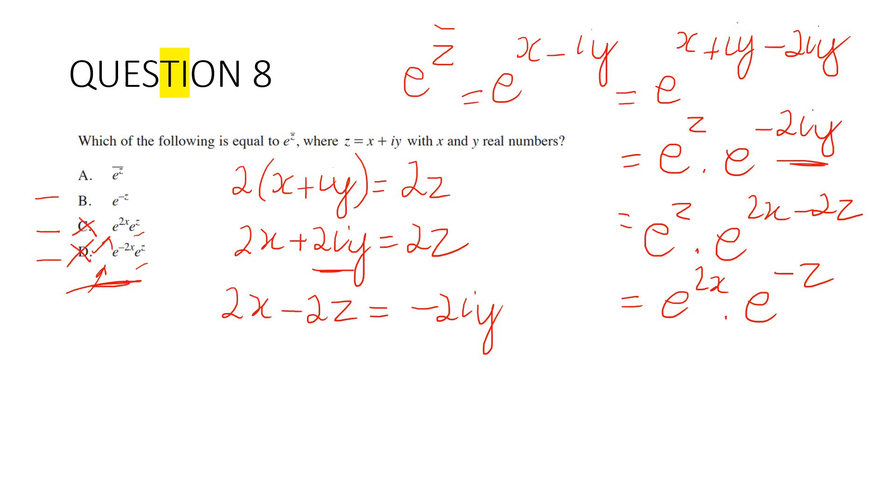Now with B, we can eliminate that because that's never going to be right. That would be e to the (x minus x minus iy), and that's never going to equal e to the (x minus iy), unless x equals 0. So it's not B. Therefore, our answer is A.